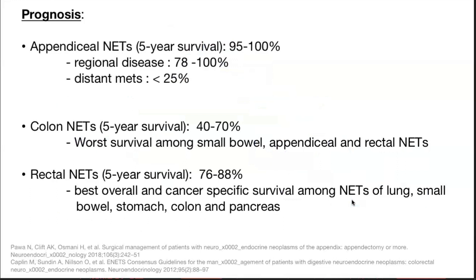Prognosis: 5-year survival for appendix NETs is around 100%; regional disease with lymph node metastasis is 80 to 100%; distant mets falls to less than 25%. Colonic NETs are extremely malignant with overall survival of only 40 to 70% — the worst among GI NETs. Rectal NETs have the best cancer-specific survival among neuroendocrine tumors of lung, small bowel, stomach, colon, and pancreas. So the worst prognosis is colonic NETs and the best is rectal NETs.